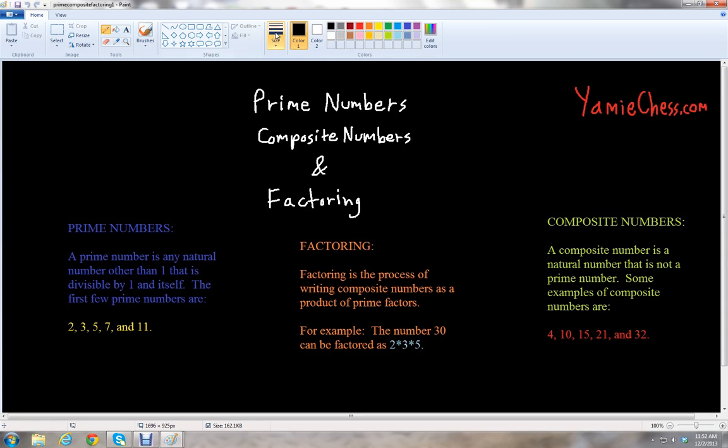Let's take a look at what are known as prime numbers. A prime number is any natural number other than one that is divisible by one and itself. The first few prime numbers are 2, 3, 5, 7, and 11. It was Euclid, the father of geometry, who proved that there were infinitely many prime numbers. There are infinitely many of these prime numbers that we can keep on counting on and on forever.